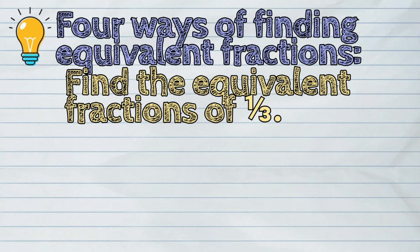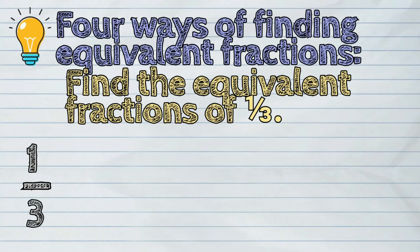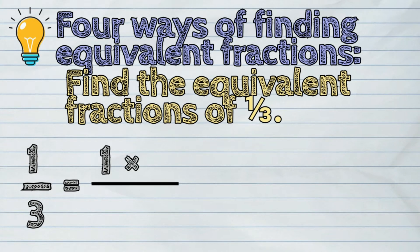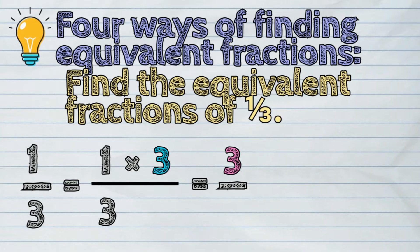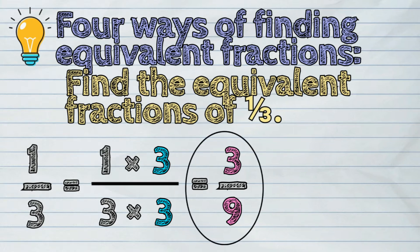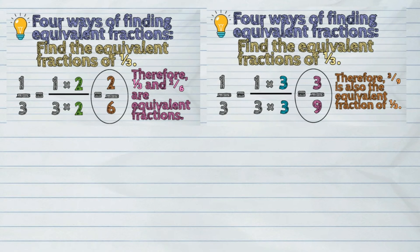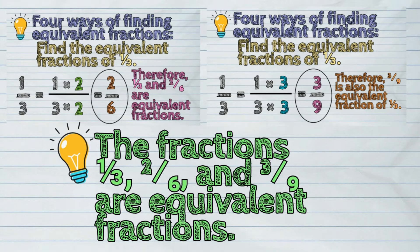Let us multiply one-third again by another number — let us try three. Numerator one times three is three. Denominator three times three is nine. So the result is three-ninths. Therefore, three-ninths is also an equivalent fraction of one-third. This means the fractions one-third, two-sixths, and three-ninths are all equivalent fractions.